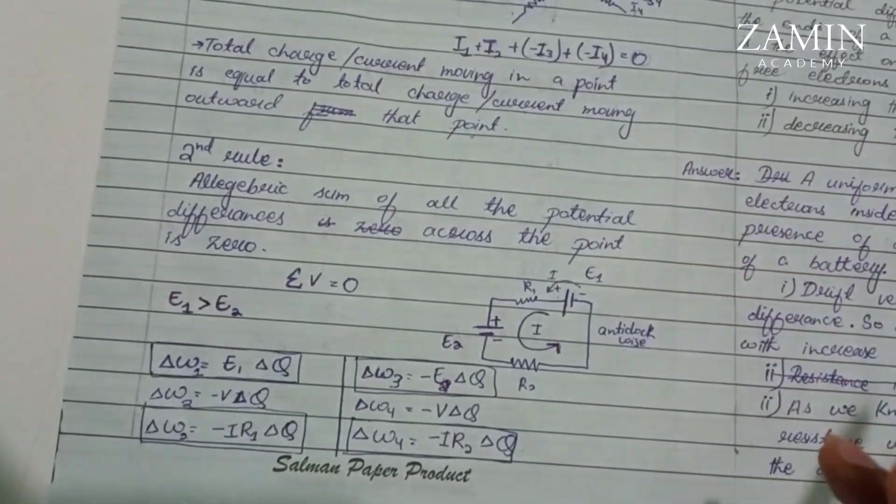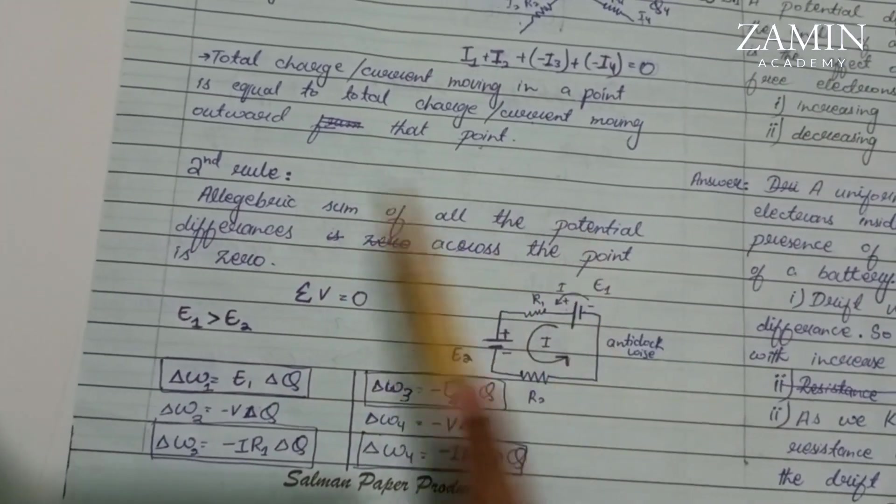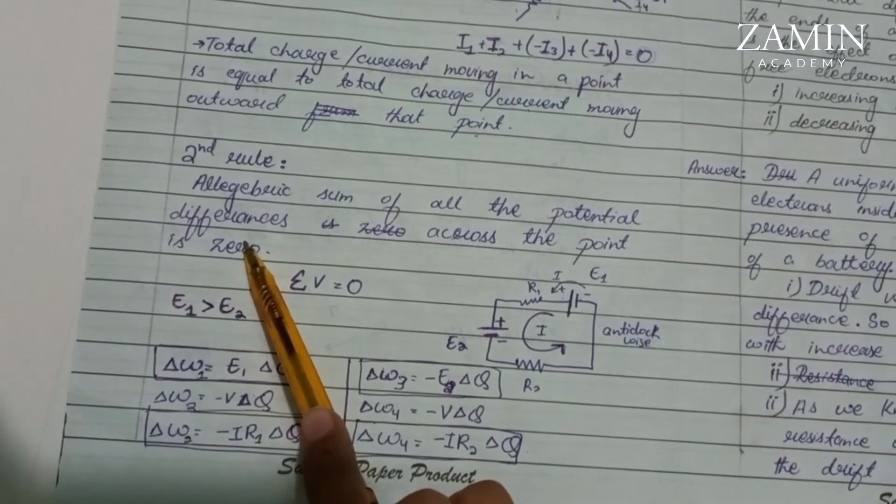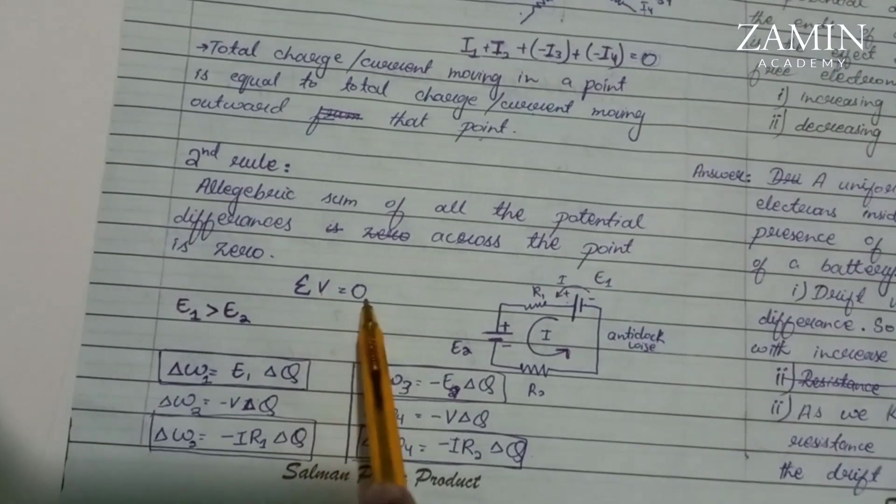Then we will look at our second rule. In the second rule, the algebraic sum of all the potential differences across the point is zero. We write this as: summation of V equals zero.